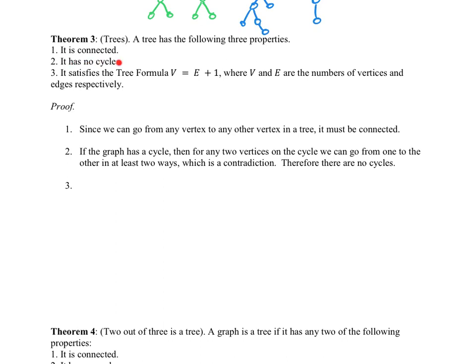Also, there's no cycles. Remember we learned what a cycle was earlier in the video? We said that a cycle is this loop that returns back to where it started and doesn't repeat edges or vertices. So we can't have a cycle because then there would be a choice of one way around the cycle or the other way around the cycle to form a path. But there's only one path between every pair of vertices. So if the graph has a cycle, then for any two vertices on the cycle, we can go from one to the other in at least two ways, which is a contradiction. So there are no cycles.